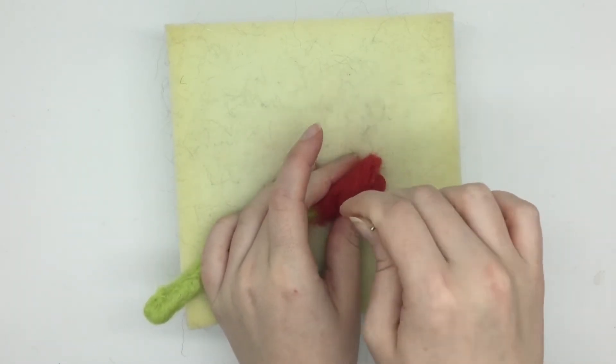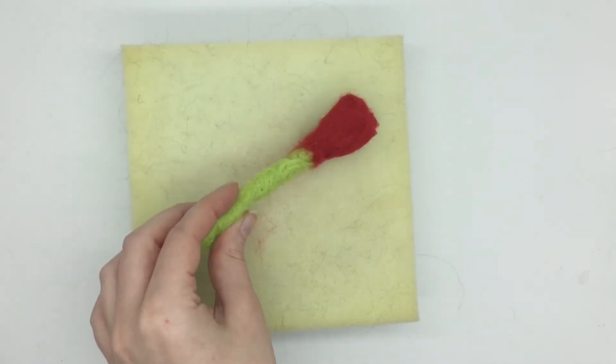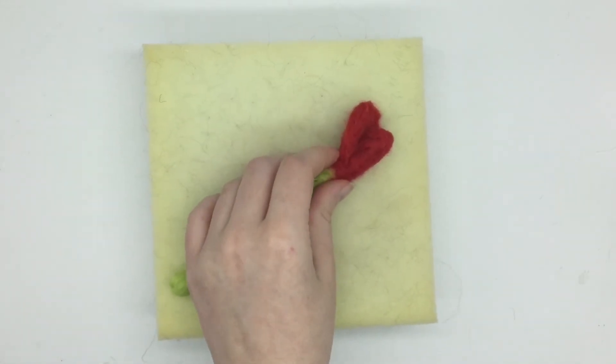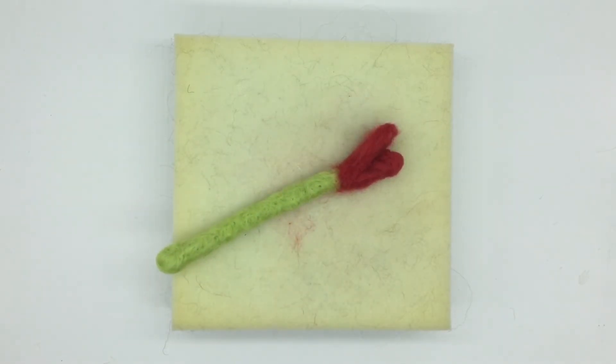Now you want to repeat this process again another two times so that the bud of the rose is surrounded by three petals in total. This is what it should look like once you have done that.